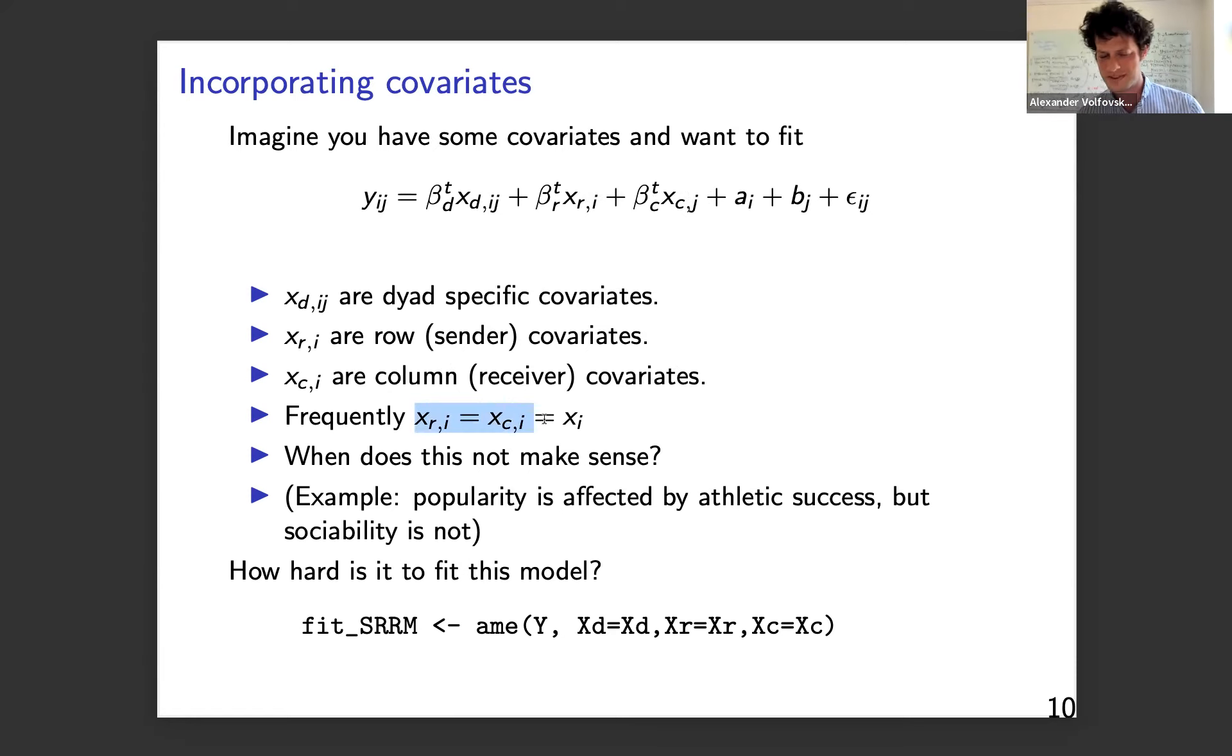This is a decomposition of maybe a continuous type of interaction, like how much does I like J, right? Some intrinsic like measure. And it's decomposed into how much does I like people in general and how likable is J, right? So a notion of sociability and popularity. We can amend this to start introducing different covariates. So there can be these dyadic covariates, these row covariates, these column covariates. And there's a lot of things we can discuss here. But while in general, it's true that XR equals XC, it's possible that you might have expert knowledge and you don't want to feed all of the same Xs into all of these things.